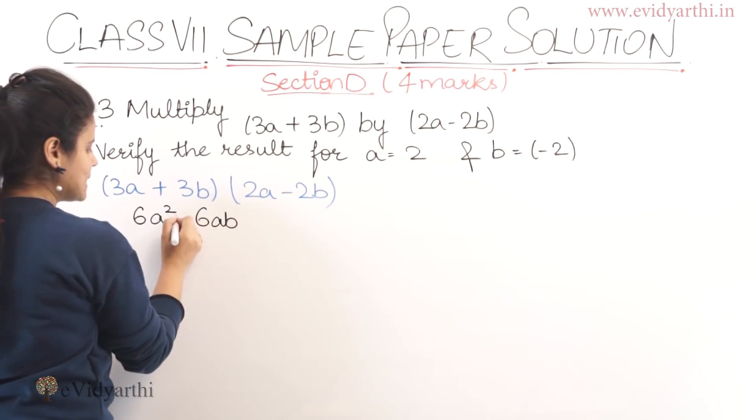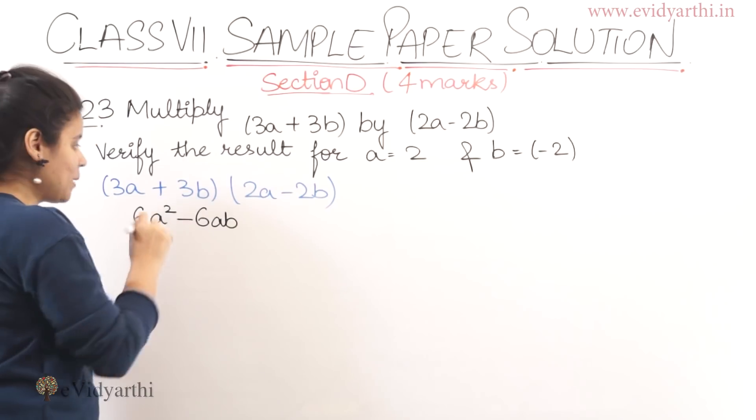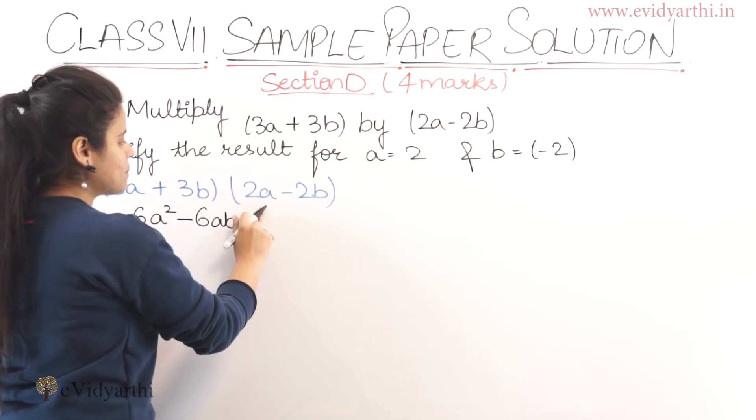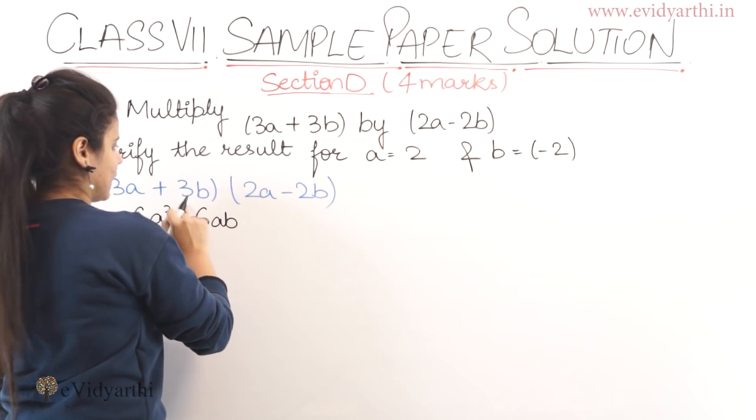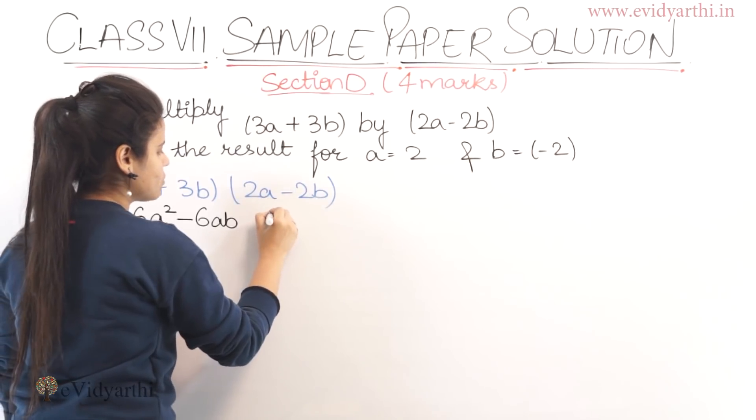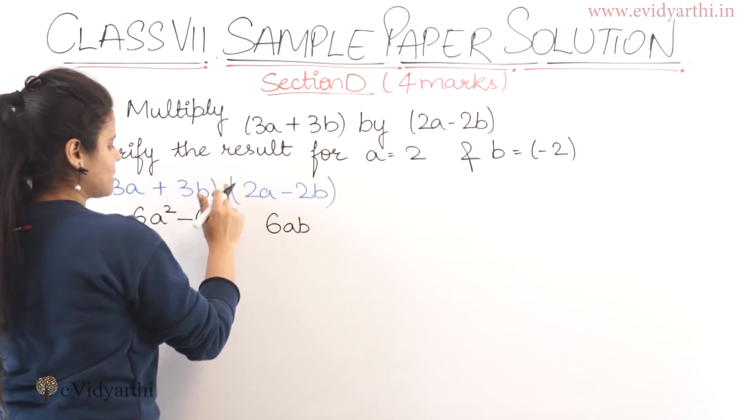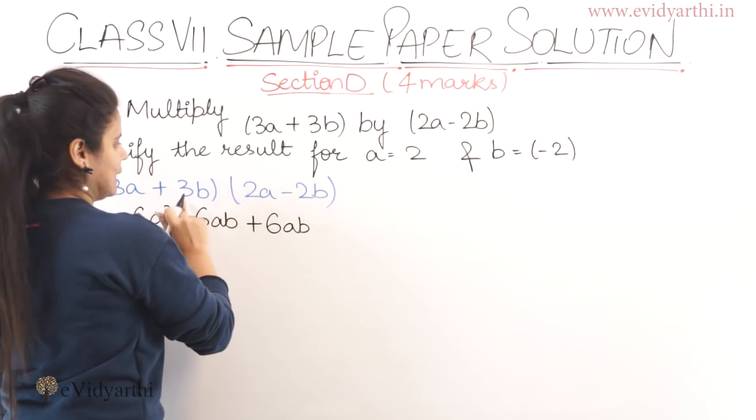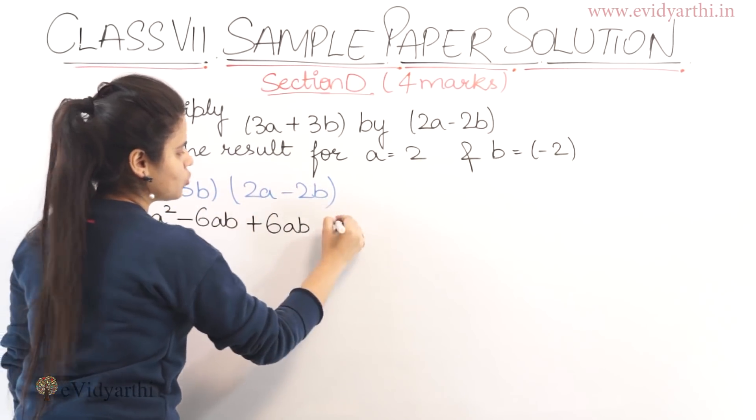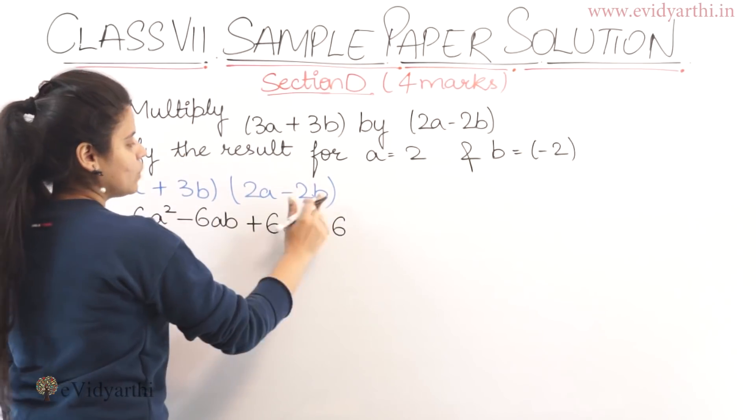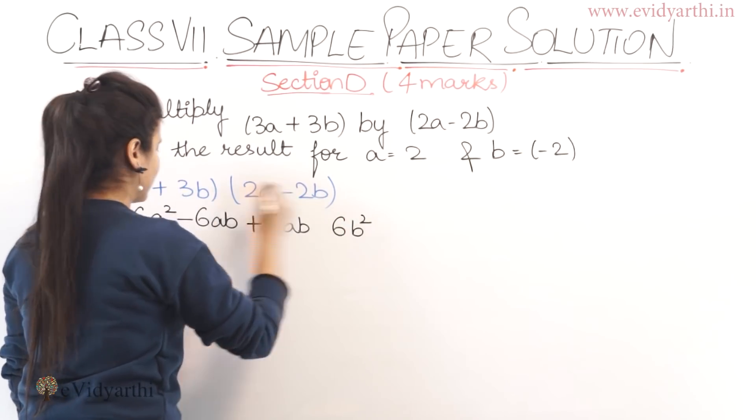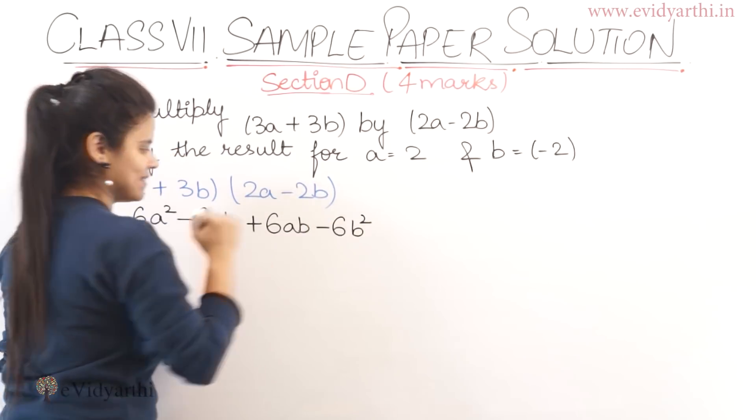Plus minus is minus. Then 3b multiply this and this one will multiply. So we get the result 6a square minus 6b square.